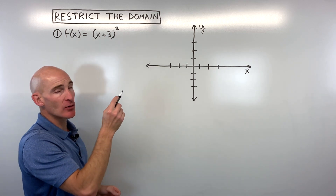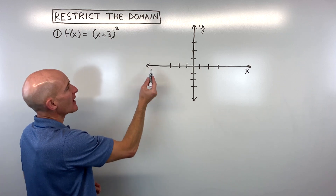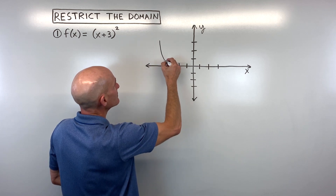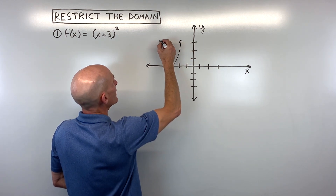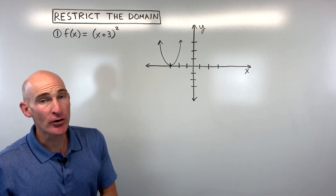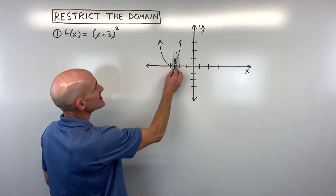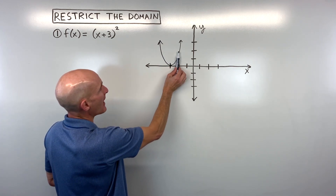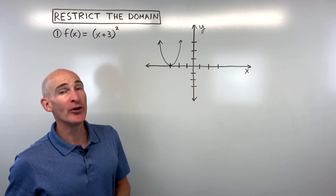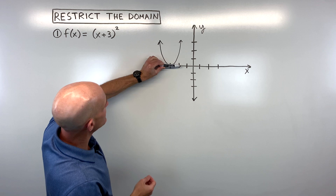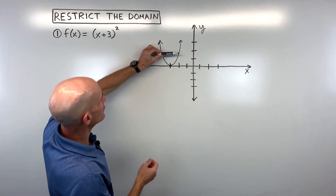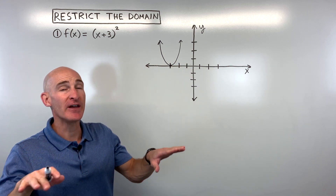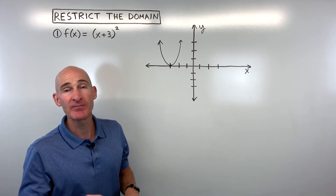We know that x squared is a parabola shape, and the plus 3 is going to shift the graph left 3. So this graph is going to look something like this. Now when you do the vertical line test, it tests to see if this graph is a function — meaning for every x value there's only one y value — and you can see that it passes. But the horizontal line test, where you scan up and down to see if the graph crosses more than once, shows that it does cross more than once, which means the inverse is not a function.